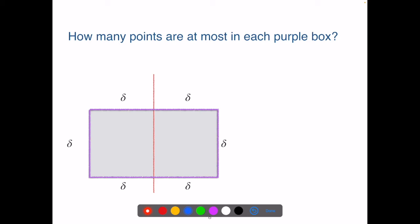Now let's see how many points we can put inside this purple box. If we have a point here, we cannot have a point here because their distance would be less than delta. So we could have one point here and another point here.